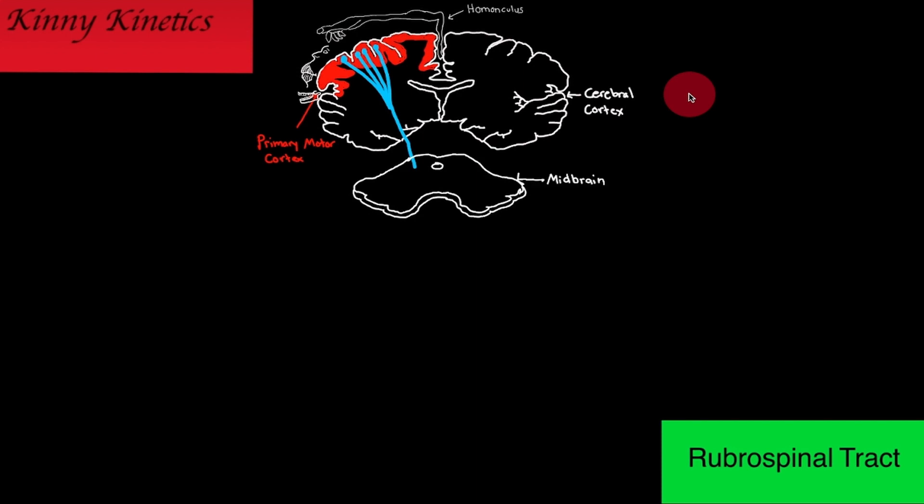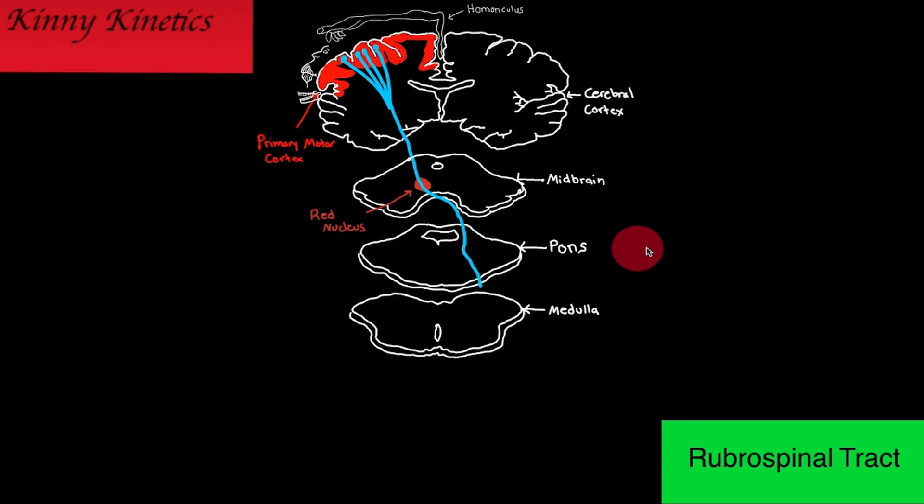Until it reaches the midbrain. Located in the midbrain here is the red nucleus. The red nucleus sends this motor command down the brain stem and travels through the pons and the medulla and continues to travel down the spinal cord.